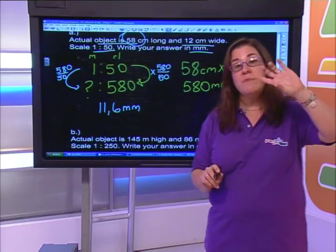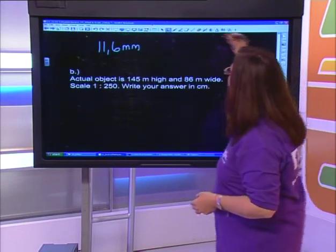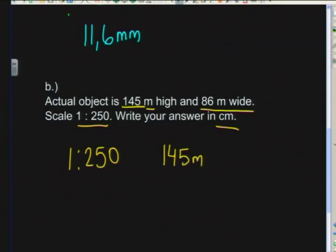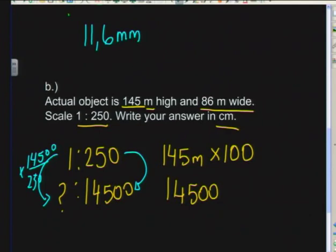I'll leave the 12 centimeters dimension for you to do on your own - download the notes and try it. For the next one: the actual object is 145 meters high and 86 meters wide, scale is 1 to 250, answer in centimeters. I take 145 meters, multiply by 100 to get 14,500 centimeters, then divide by 250. Let's rewrite that: 14,500 ÷ 250 = 58 centimeters.